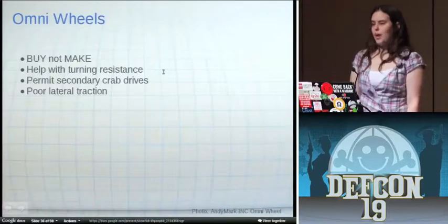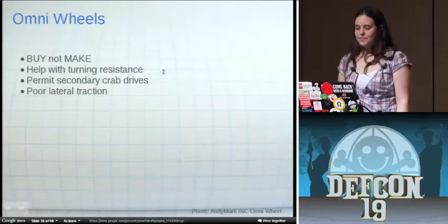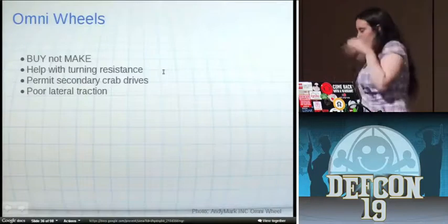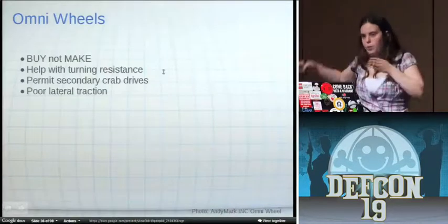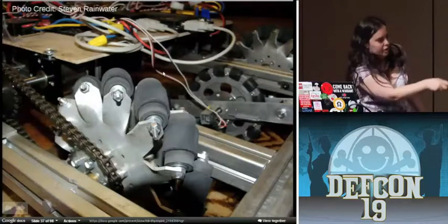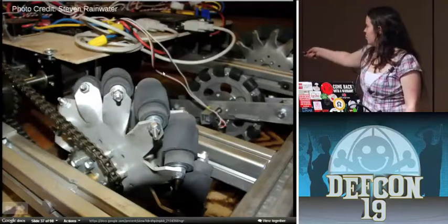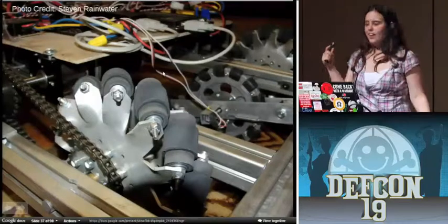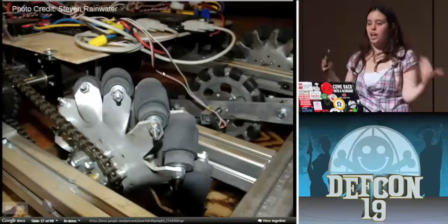Omni wheels, unless you have a good reason, you should just buy these. So many people want to make them. I warned you. They're helping with the resistance. They permit, like some people will have a set of wheels going this way on the robot and then a set of wheels going this way on the robot. And what you can do is by driving different sets of wheels independently, you get a robot that goes this way and goes this way without turning. Cute trick. Terrible lateral traction for pretty obvious reasons. This thing in the middle here is an omni wheel. I'm sorry, the speaker's in the way. This thing towards the middle is an omni wheel. And as you can see, it's a yo dog, I heard you like wheels, so I put some wheels on your wheels. These little black things are free floating.